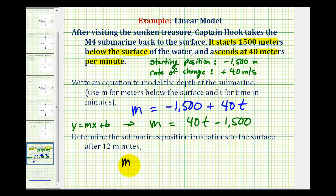So the depth in meters after 12 minutes is going to be equal to negative 1,500 plus 40 times 12. That would be negative 1,500 plus 480. So this is going to be negative 1,020.